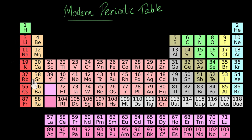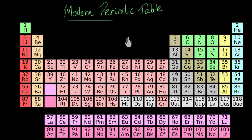All the elements in one group, or basically one column, they will have similar chemical properties, and so on and so forth. But it took us some years of effort and trials to arrive at this current periodic table.